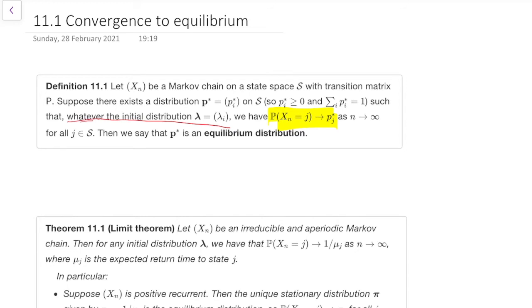So obviously there can't be multiple equilibrium distributions, right? Because we're saying it's for whatever the initial distribution. So there is at most one equilibrium distribution. You can't have something tending towards two different things. But is there going to be an equilibrium distribution at all?